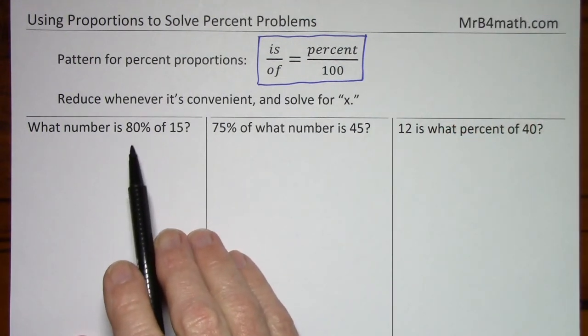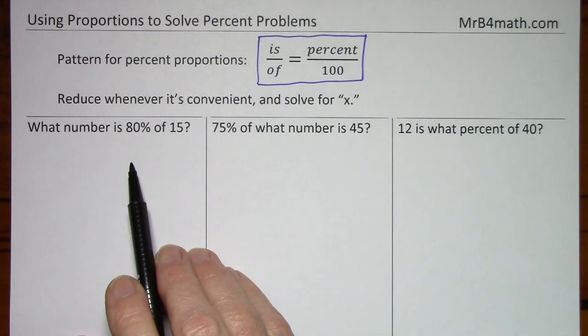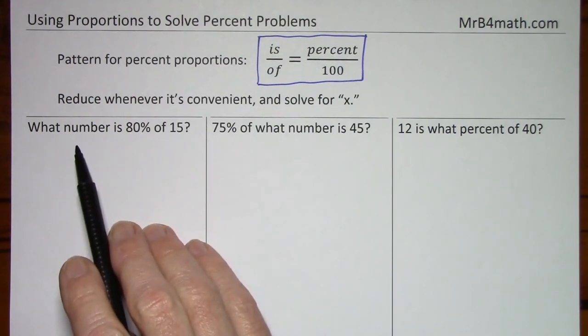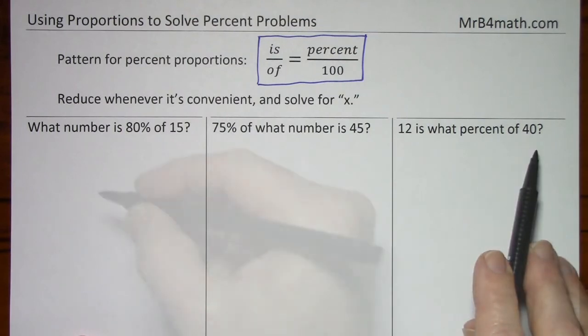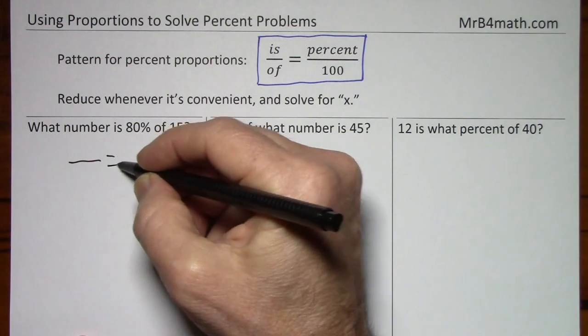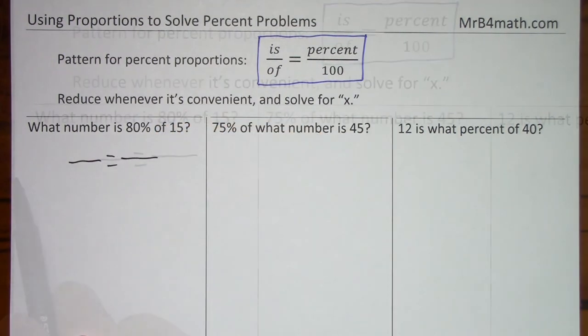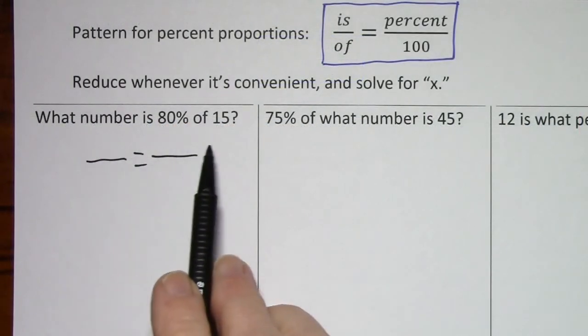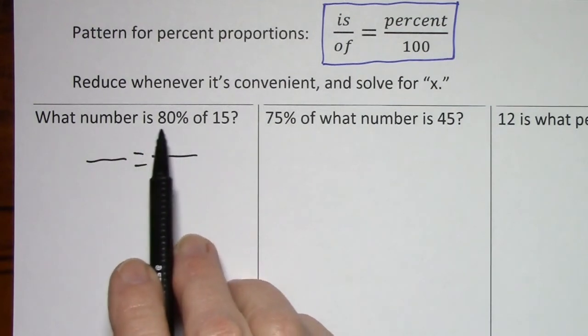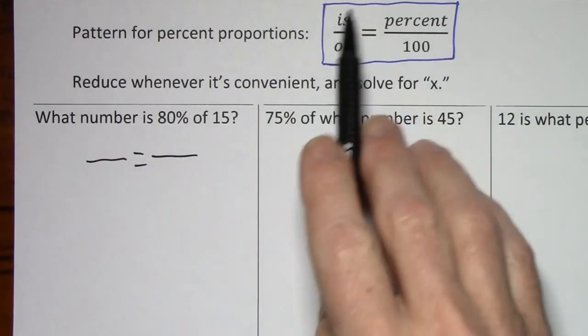Eighty percent is 80 over a hundred so that's two numbers. Here's the third number you're asked to find the fourth. It's the same way with each of these sentences. With each of these I'll put in a fraction bar, equal sign, and a fraction bar. And then looking at the sentence based on the words is, of, and the percentage, I'll follow this pattern.